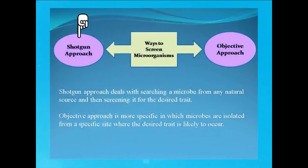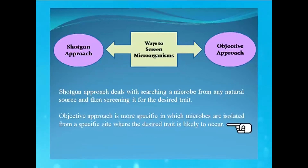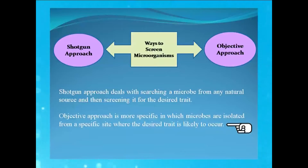Screening can be done in two ways: by shotgun approach or by objective approach. Shotgun approach deals with searching a microbe from any natural source and then screening it for the desired trait. In the objective approach, microbes are isolated from a specific site where the desired trait is likely to occur. So objective approach is more appropriate and specific than shotgun approach.